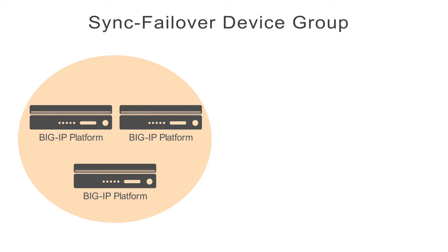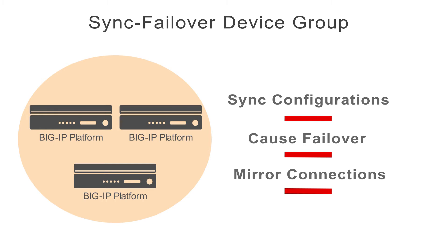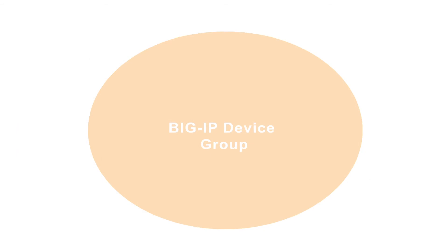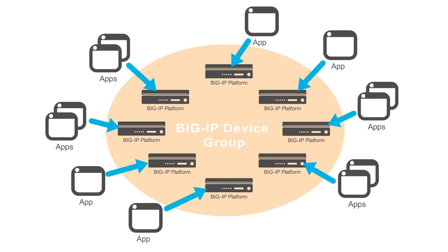In a sync failover device group, all devices can regularly use a process called configuration synchronization, or config sync, to sync their BigIP configurations to one another. Successful failover depends on all BigIP configurations matching in a device group at all times. If a device processing an application flow becomes unavailable for any reason, failover occurs and another device can take over to process that flow. A device processing an application flow can mirror its connections to another device in the device group to minimize disruption on failover. You can put up to eight devices in a sync failover device group, and each device can be actively processing one or more application flows.